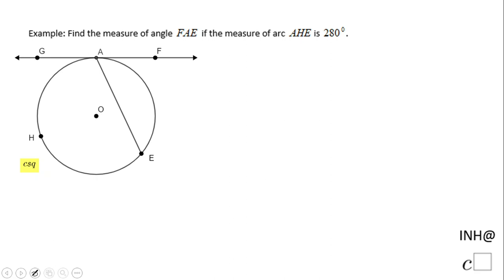Welcome or welcome back to I Need Help at C Squared. In this example, we need to find the measure of angle FAE, which is this angle, if the measure of arc AHE, which is this arc, is 280 degrees. That is the major arc.